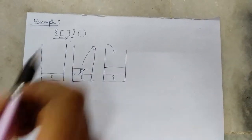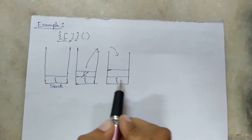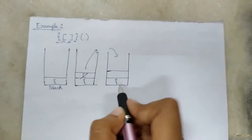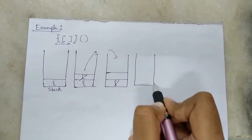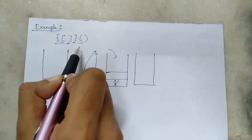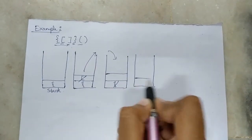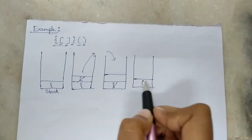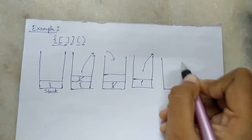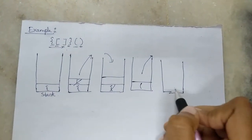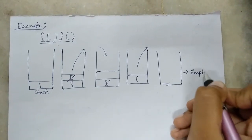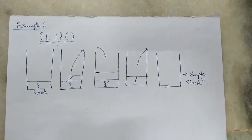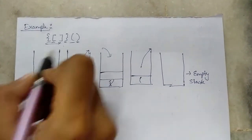Coming to the fourth element, which is the closing curly brace — it satisfies the matching pair condition, so it is popped out and the stack becomes empty. The fifth element is an opening parenthesis, so we push it onto the stack. Then the next element is a closing parenthesis, so it pops out and the stack is empty again. Since the stack is empty at the end, the balanced parenthesis condition is satisfied and hence this is a balanced parenthesis expression.